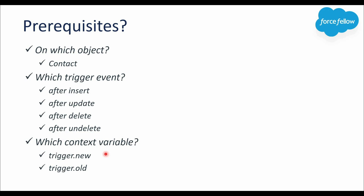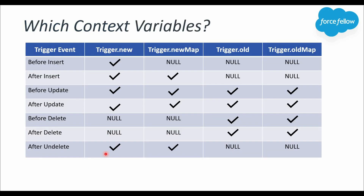Next, which context variables will we use? We will mostly use Trigger.new because we won't perform any action based on contact IDs, so Trigger.newMap is not required — we can simply work on the list. Trigger.new is available in all events except Delete, where it will be null in Before Delete and After Delete operations. So for After Insert, After Update, and After Undelete we will use Trigger.new, and for After Delete we will use Trigger.old.